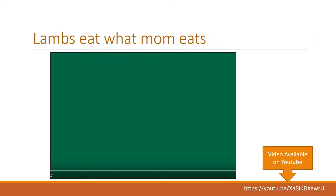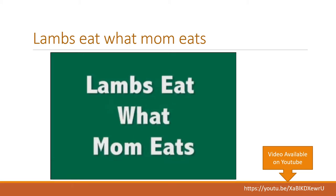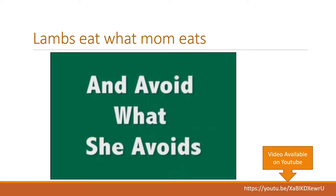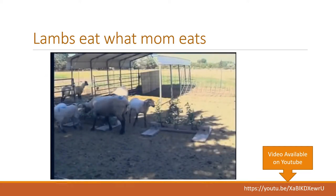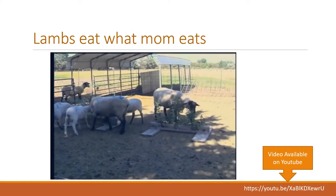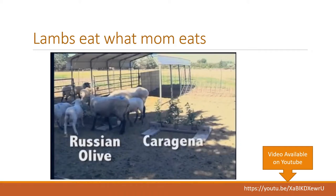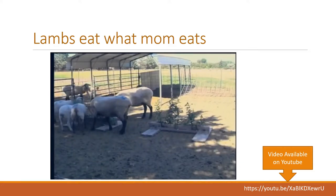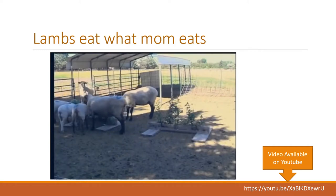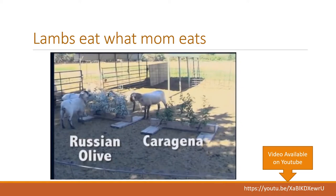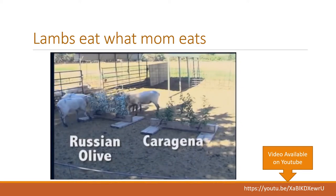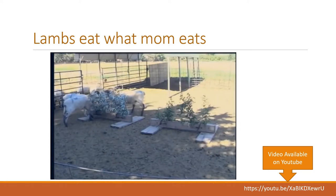Now let's look at the influence of mother when lambs are learning to eat caragena and Russian olive. Instead of their normal morning meal, these ewes and their lambs are being offered Russian olive and caragena. The ewes are familiar with both shrubs, but after eating caragena they received a bolus of lithium chloride, which caused nausea and an aversion to caragena. The lambs have no experience with either plant, so they choose to eat what mom eats. After eating the shrubs with their mothers for five days, the lambs are put in the pen without their mothers. Because of experience from eating with mom and positive feedback from nutrients in Russian olive, they stick to what mom ate and avoid what she avoided.